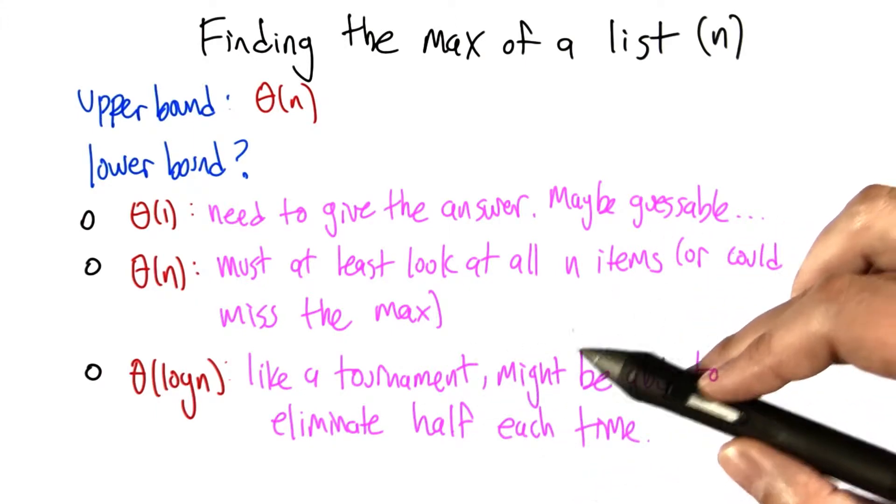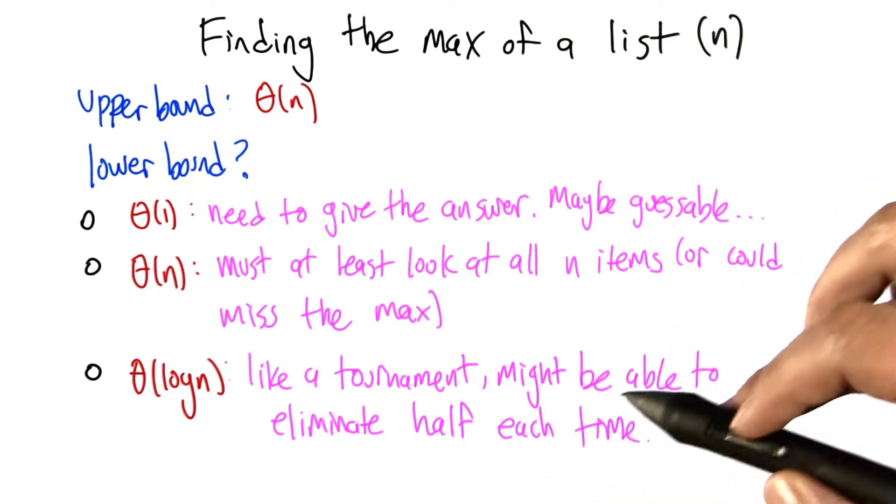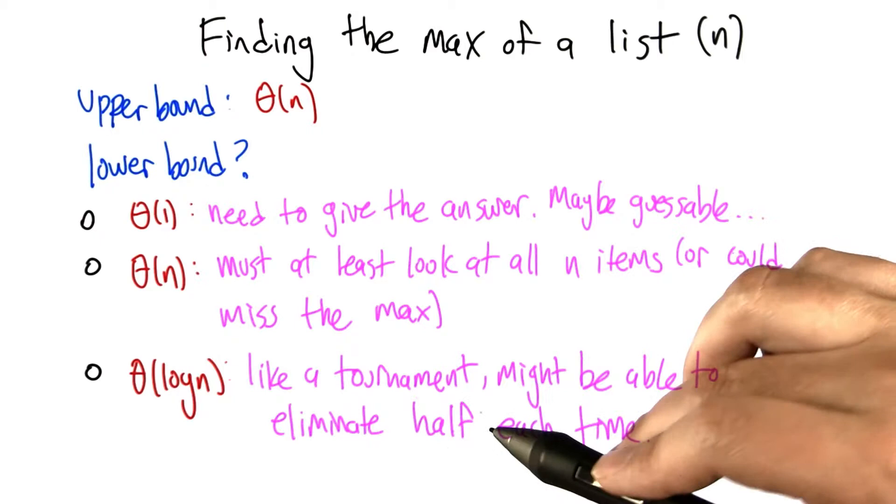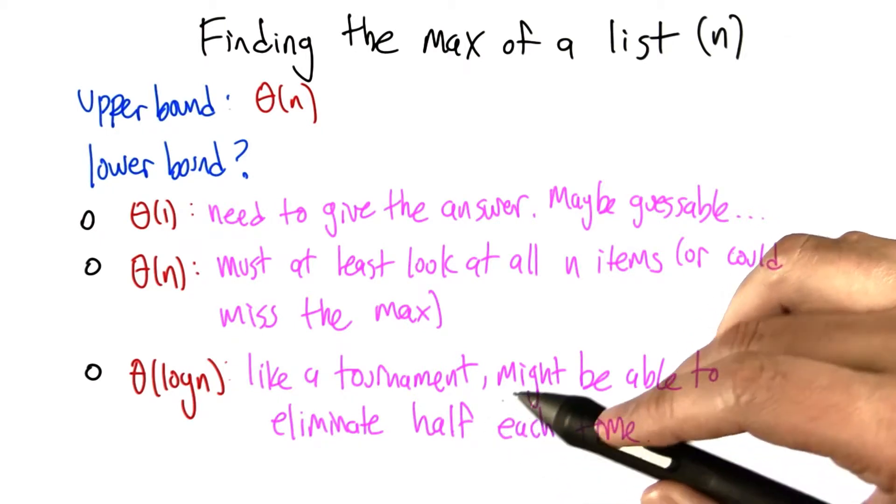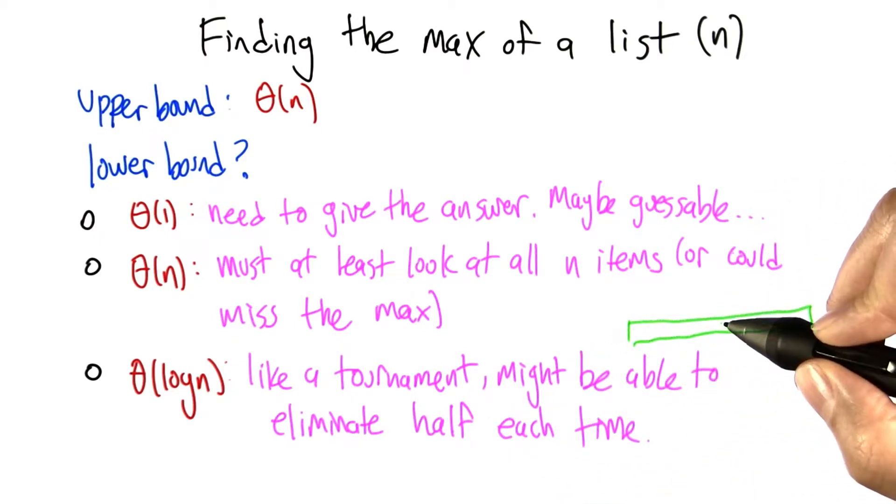So what about this tournament argument? In a parallel computing scenario, you actually can do something like this, where you have the list of numbers that you're trying to compute the max of. You can separate this into two lists.